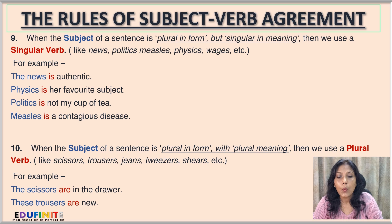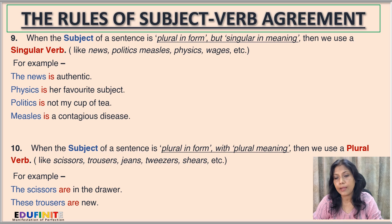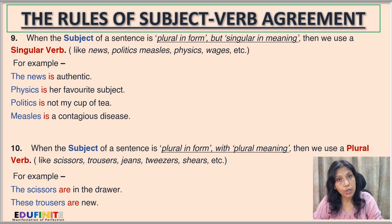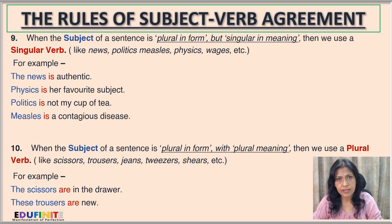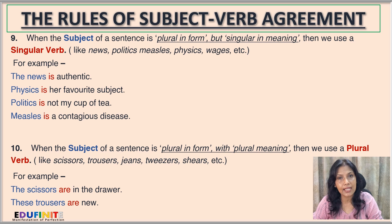Rule number ten: when a subject is plural in form with plural meaning, we use a plural verb. Examples include scissors, trousers, jeans, tweezers, shears. 'The scissors are in the drawer.' 'These trousers are new.' We don't say 'the scissors is in the drawer' or 'these trousers is new'.